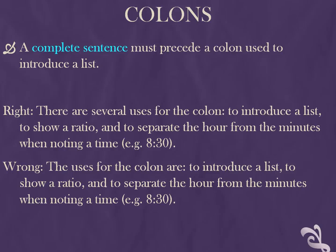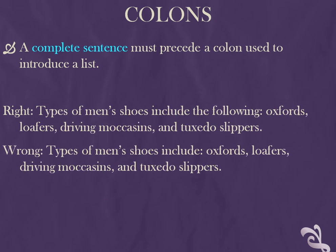Colon usage often mystifies students beginning graduate school. It's a mark of punctuation that we've all seen used in books and articles, but few students have had real instruction on how to use the colon. For starters, a complete sentence must precede a colon that's used to introduce a list. For example, this correct version: "There are several uses for the colon" — a complete sentence. Incorrect: "The uses for the colon are" — this is an incomplete sentence. Another example: "Types of men's shoes include the following" is correct, versus "Types of men's shoes include" — incomplete and incorrect.